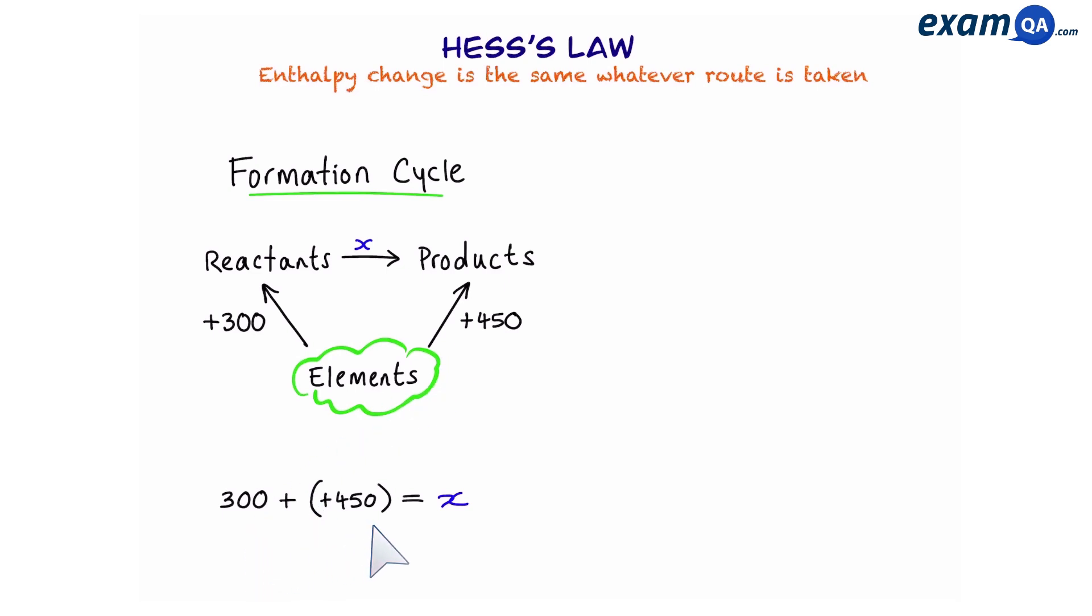However, have you noticed that there's something wrong with the cycle? Here's a reminder. Hess's law says that you can go like this from reactants to products, or you can go like this and then up. Notice that one of our arrows is not pointing in accordance to Hess's law. This is normal. So what we have to do now is flip the sign on this value. So this becomes minus 300. Then we can add them together like normal, and that should give us a final answer of 150.